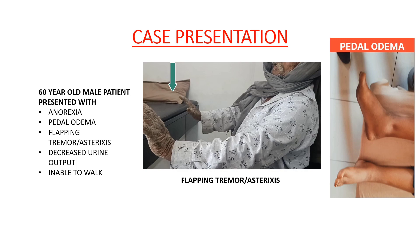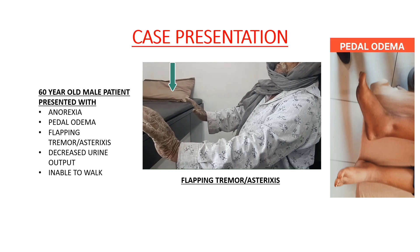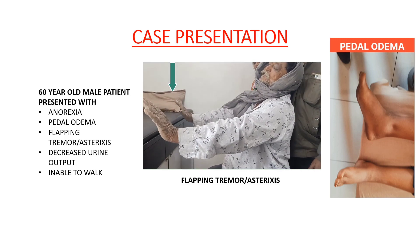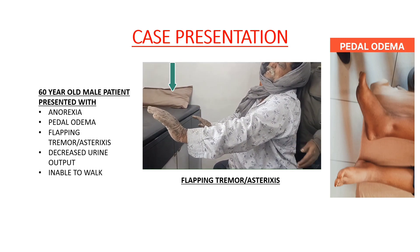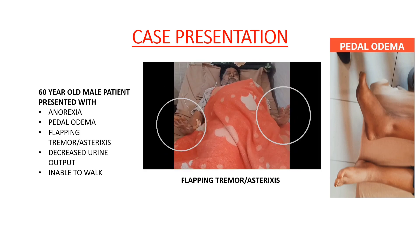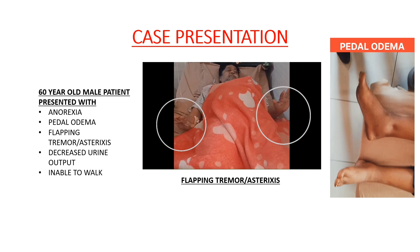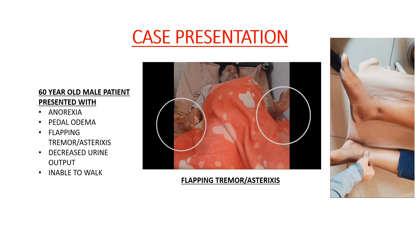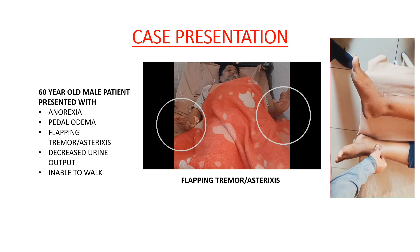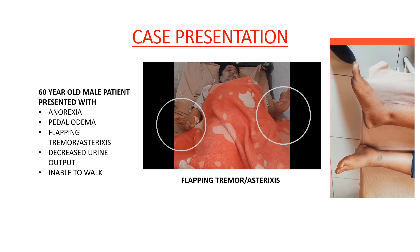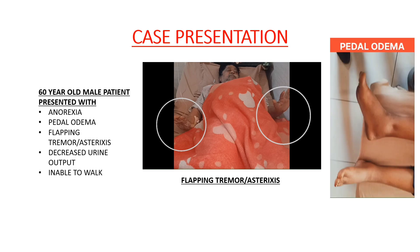What is flapping tremor or asterixis? You can see in this video the tremor of the hand when the wrist and elbow is extended. It is also known as negative myoclonus, which is a typical sign of uremic encephalopathy. On the right side of the video you can see the pedal edema — when you compress the thumb over the shin of the tibia for 15 seconds, you can see the indentation. It is known as pitting type of pedal edema.